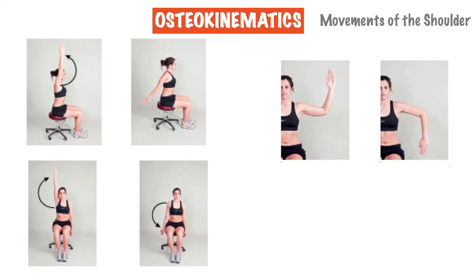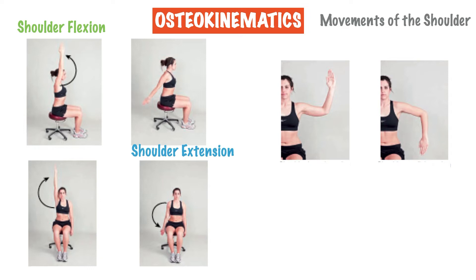Let's now take a look at the osteokinematic movements of the shoulder. First up is shoulder flexion, which from a seated position involves moving the arm forward to the point where it's parallel to the head. Next is shoulder extension, which from a seated position involves moving the arm from the side of the body towards the back of the body to the furthest point of extension, while keeping the torso straight and with the head pointing forward.